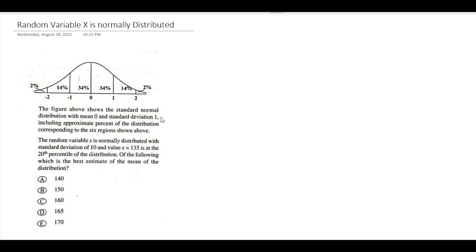So far so good. Including approximate percent of the distribution corresponding to the six regions shown above: 34, 34, 14, 14, 2, 2. Cool. The random variable X is normally distributed with standard deviation of 10.